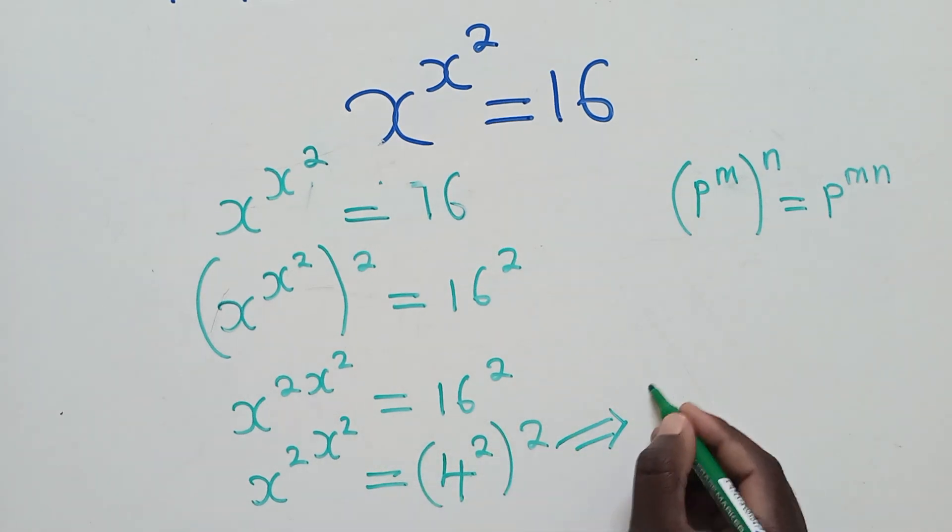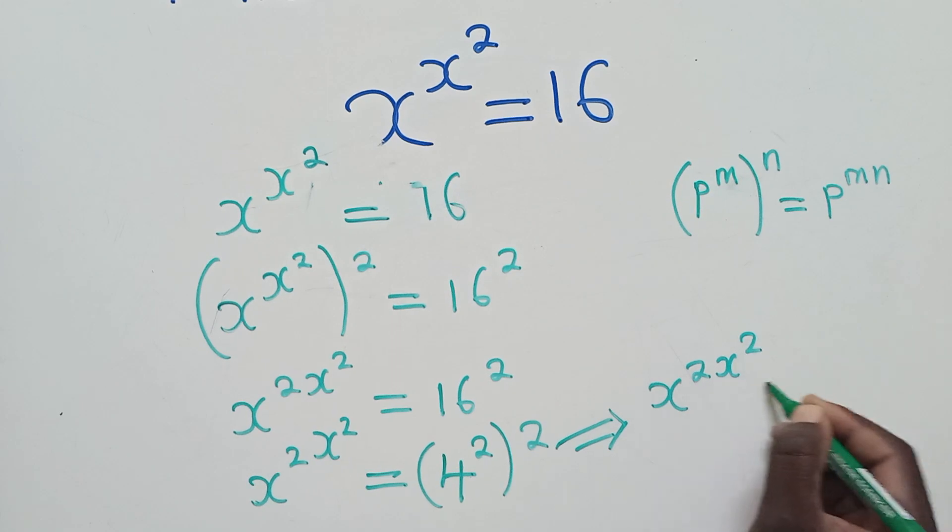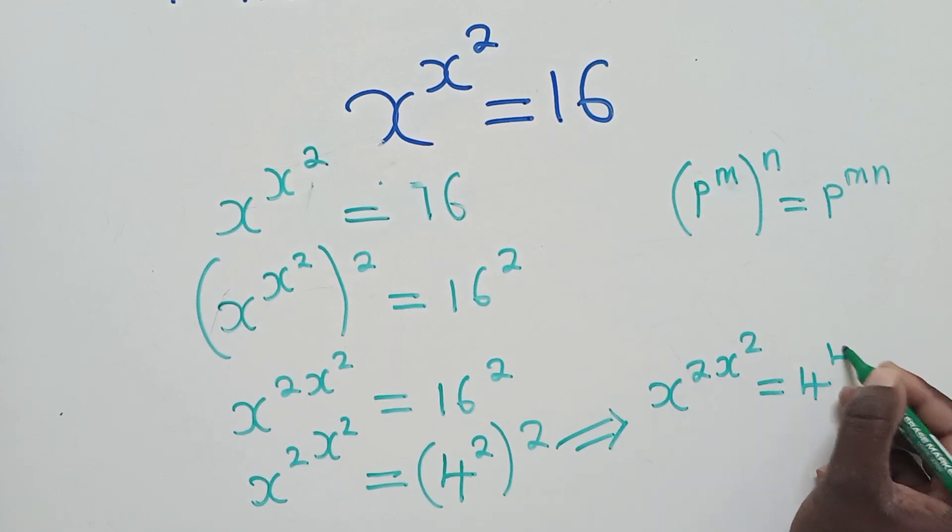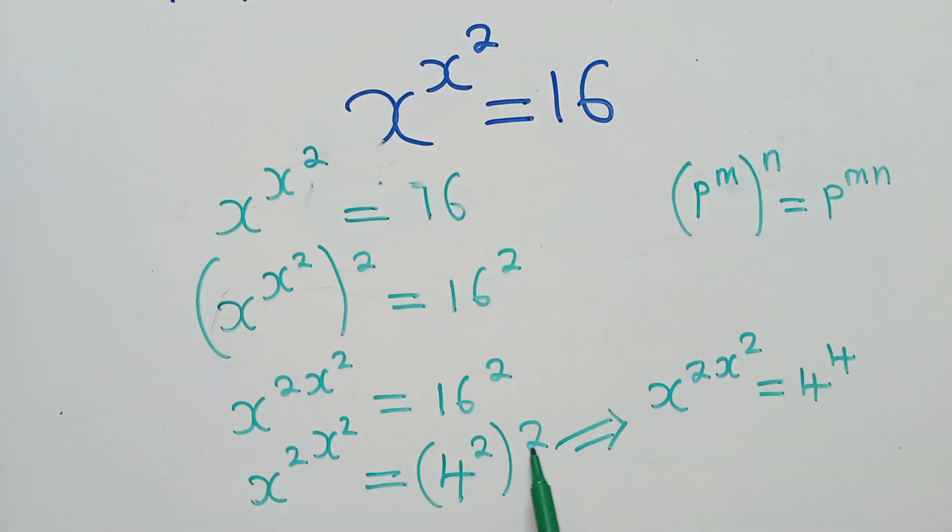x^(2x^2) is equal to 4^4. This is 4^4 because by the laws of indices, this right here will be 2 times 2, which will give us 4. So we shall have 4^4, of which we are going to have x^(2x^2) is equal to 4.